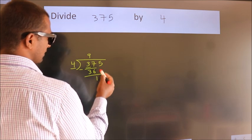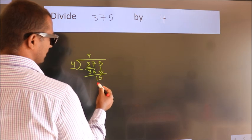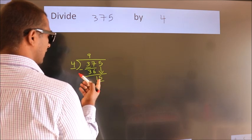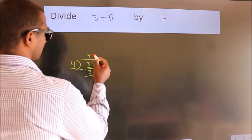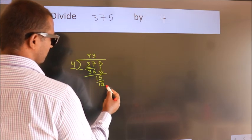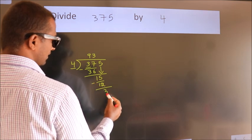After this, bring down the next number. So 5 down. So 15. A number close to 15 in the 4 table is 4 times 3 equals 12. Now we subtract. We get 3.